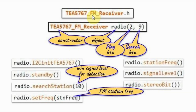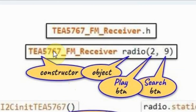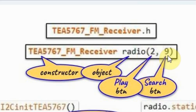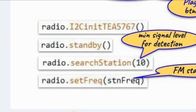This is the constructor of the library, which is used to declare objects. This object has two arguments which indicate the connection of the play button to the digital pin of the Arduino and the search button.